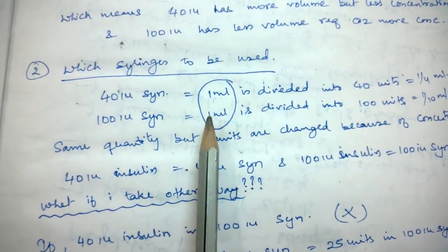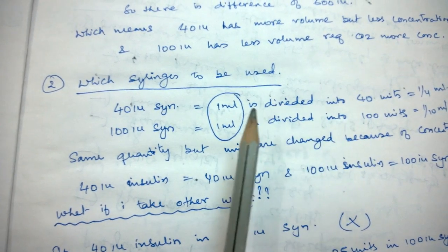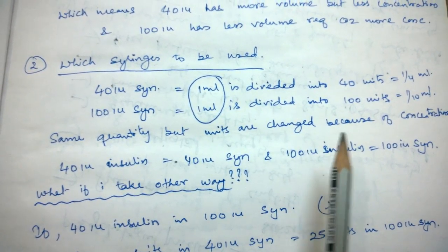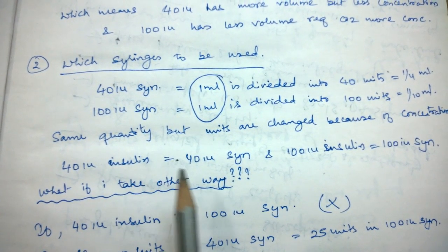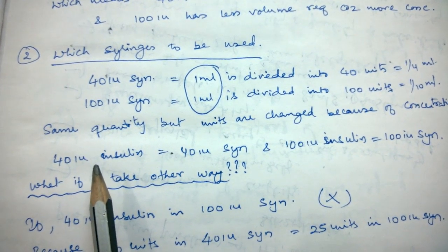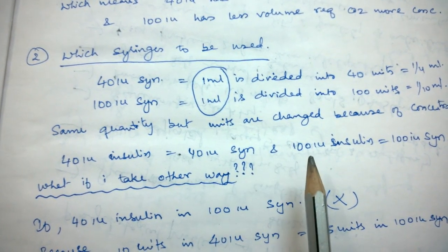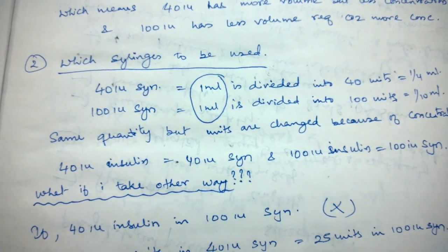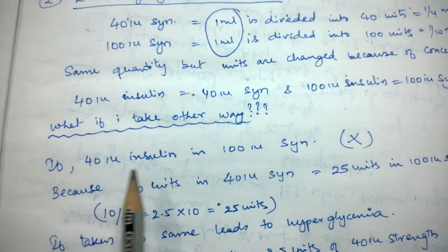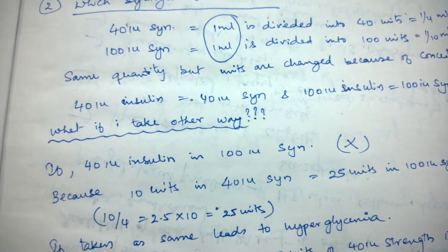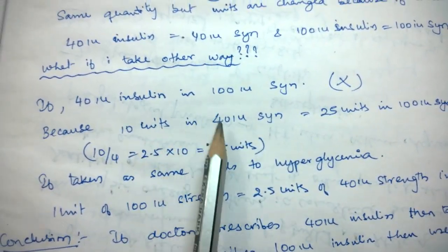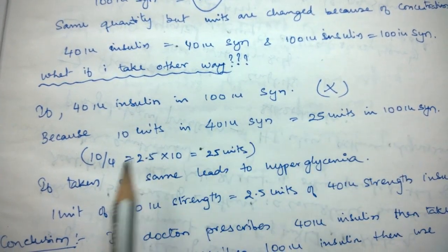The ml volume is the same but, because the units are different, the quantity and strength are also different. The same volume carries different units due to concentration differences. So for 40 IU insulin you must use a 40 unit syringe, and for 100 IU insulin you must use a 100 unit syringe. If you use 40 IU insulin in a 100 unit syringe, you are making a serious mistake — because 10 units on a 40 IU syringe equals 25 units when calculated for a 100 IU syringe.